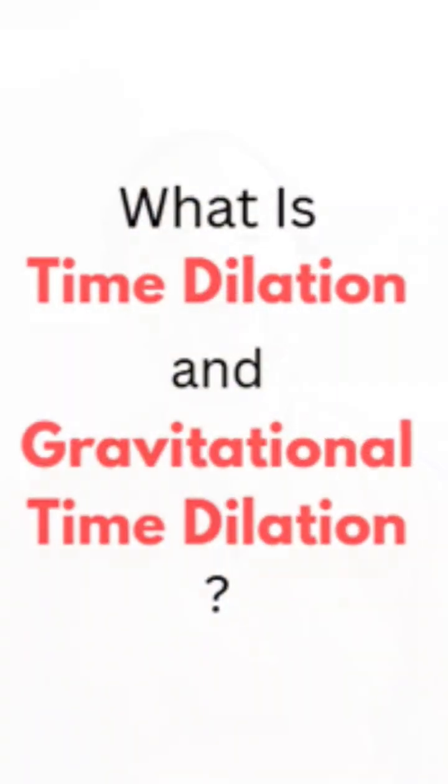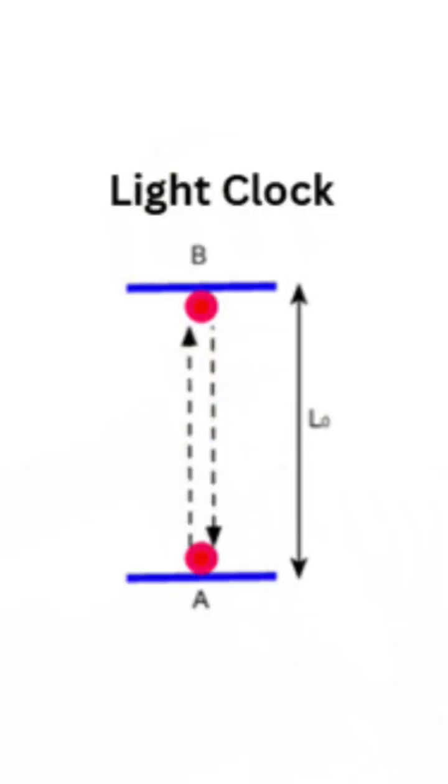Another big misconception in learning relativity is time dilation and gravitational time dilation. I want you to think of time dilation using something called a light clock. The light clock goes up and down — tick-tock, tick-tock. Light reflects at the front of the mirror and back again, so each tick and tock makes one cycle — you can think of it as one second.